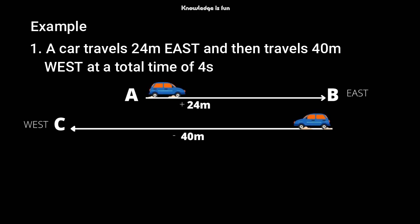Looking at the diagram: the car starts from rest at position A, travels 24 meters to position B going east, then turns back to position C covering 40 meters going west. If you are asked to find the average speed, don't forget: average speed equals total distance over total time.